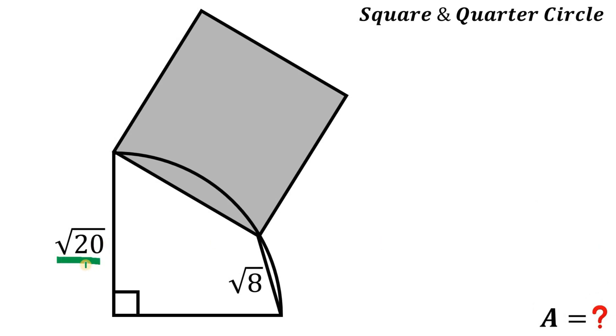Because 20 is 4 times 5, square root of 20 can be written as 2 times square root of 5. Also, this square root of 8: 8 is 4 times 2, so we can simplify this as 2 times square root of 2. Now to answer this question and find the area of the square...